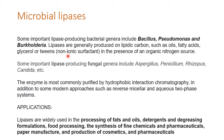Tweens are non-ionic surfactants — for example, Tween 80 — which we use in practicals. These are also lipidic carbon sources that can be used for the production or isolation of such bacteria. Some important lipase-producing fungal genera are Aspergillus, Penicillium, Rhizopus, and Candida.